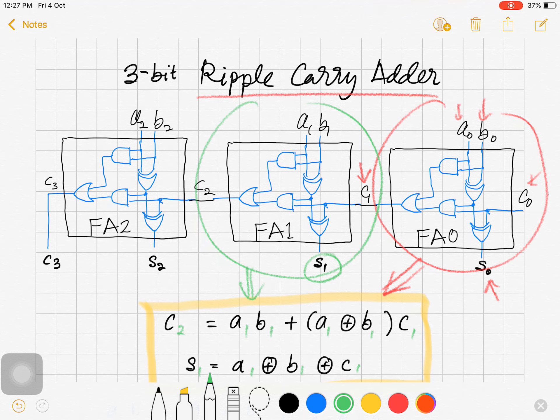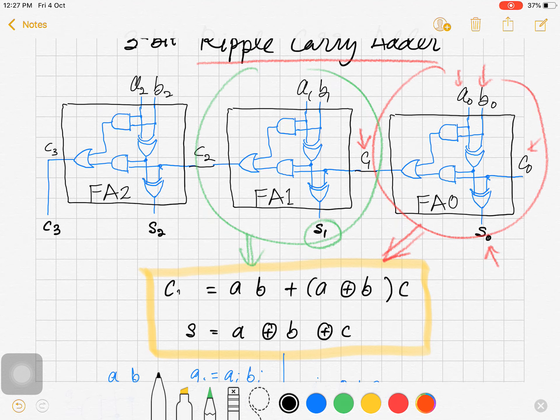So in general, the formula can be written as: C(i+1) equals Ai Bi or Ai XOR Bi Ci, and Si equals Ai XOR Bi XOR Ci, where i equals 0, 1, and 2.